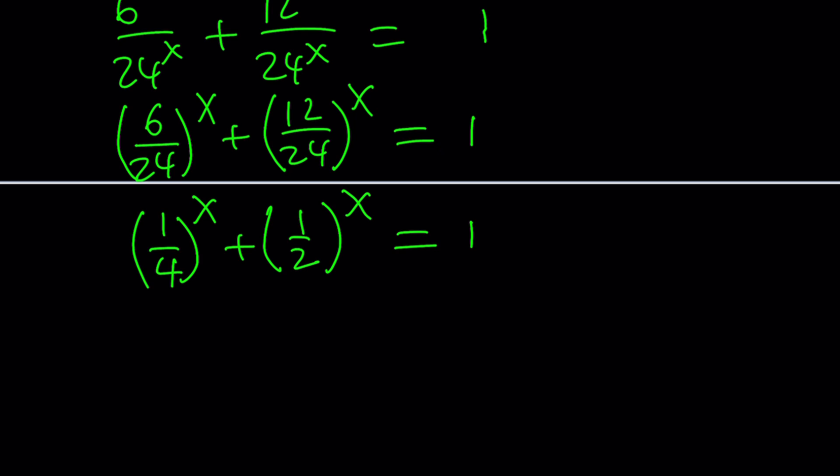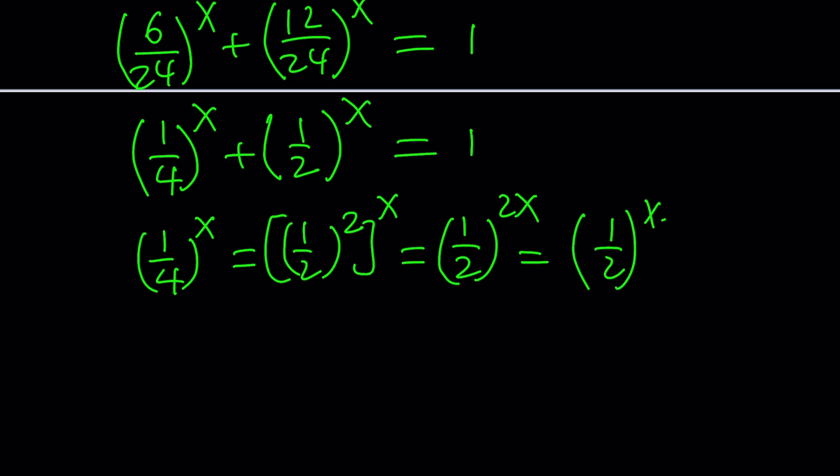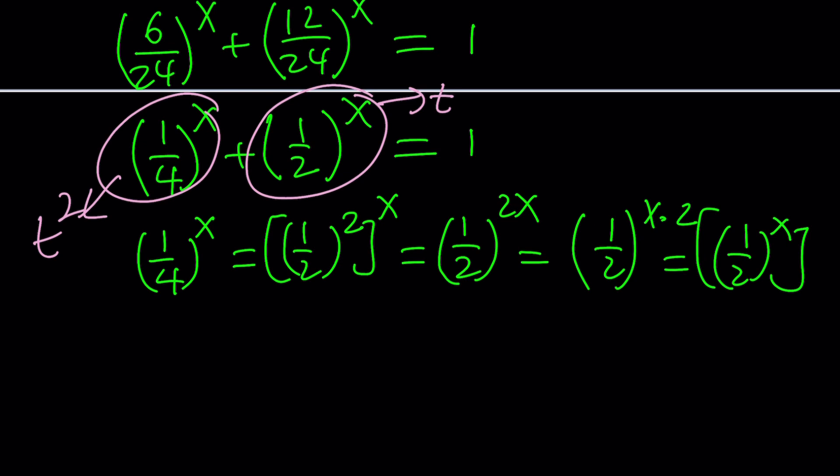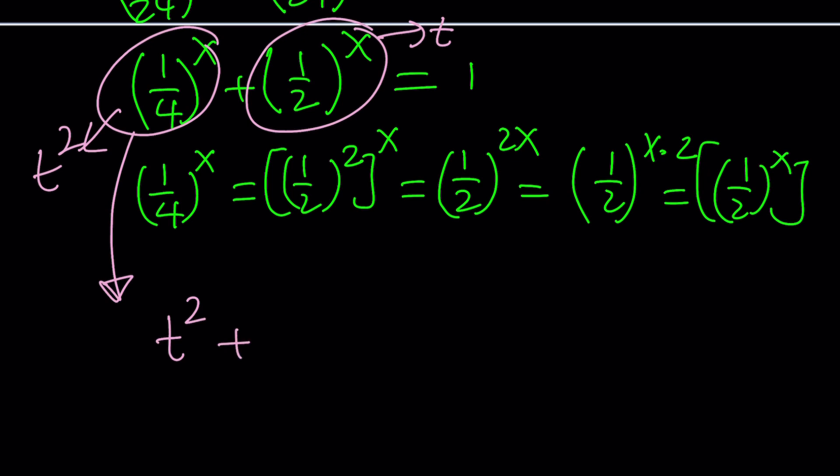Do you see what I'm talking about? We have 1/2^x and 1/4^x. Are they related? Absolutely. 1/4^x is (1/2)^(2x), which is (1/2)^x squared. So if I name this something like t, this will become t^2. They're very much related. And now our equation becomes t^2 + t = 1.